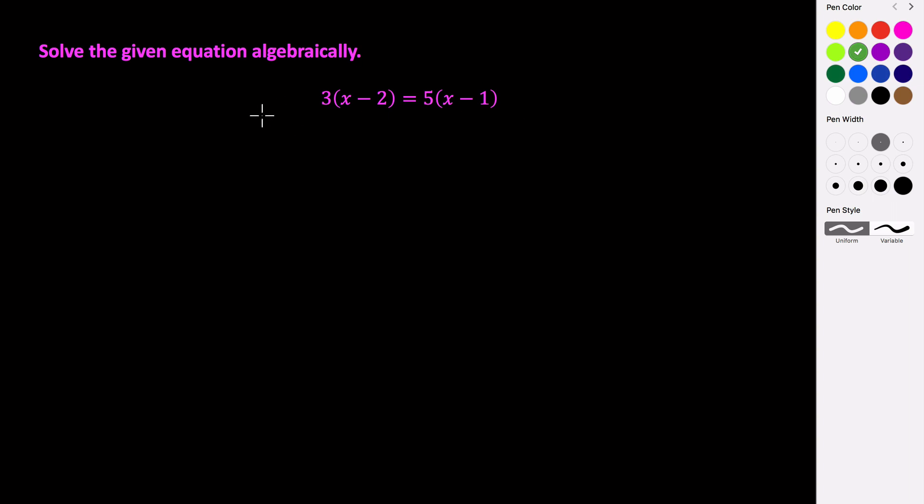The first equation I want to look at is one like this. So this is a problem that you would have seen probably in Algebra 1. And to solve this what we need to do is try and isolate our variable. So first we're going to distribute the 3 through and the 5 through to our quantities respectively. So we'll get 3x minus 6 equals 5x minus 5.